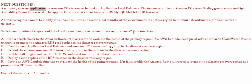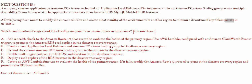A company runs an application on Amazon EC2 instances behind an Application Load Balancer. The instances are run in an Amazon EC2 auto-scaling group across multiple availability zones in US East 1. The application stores data in an Amazon RDS MySQL Multi-AZ DB instance. A DevOps engineer wants to modify the current solution and create a hot standby of the environment in another region to minimize downtime if a problem occurs in US East 1. Which combination of steps should the DevOps engineer take to meet these requirements? Choose 3.